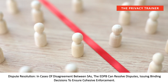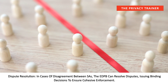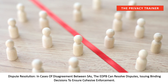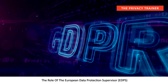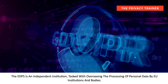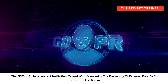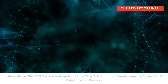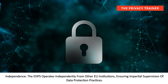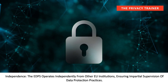Dispute Resolution. In cases of disagreement between SAs, the EDPB can resolve disputes, issuing binding decisions to ensure cohesive enforcement. The role of the European Data Protection Supervisor, EDPS. The EDPS is an independent institution, tasked with overseeing the processing of personal data by EU institutions and bodies. The EDPS operates independently from other EU institutions, ensuring impartial supervision of data protection practices.